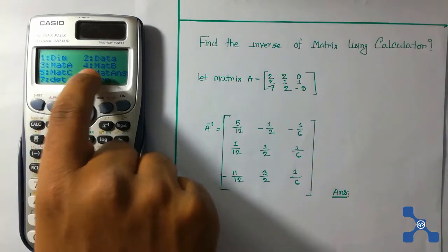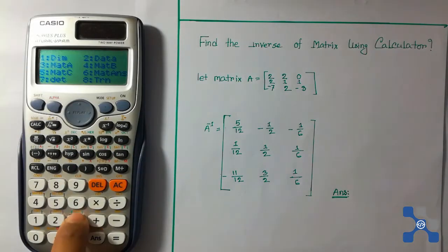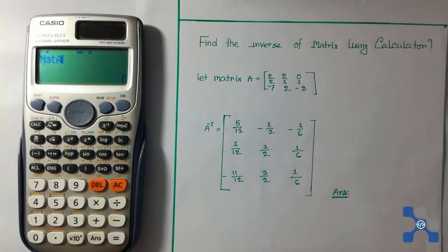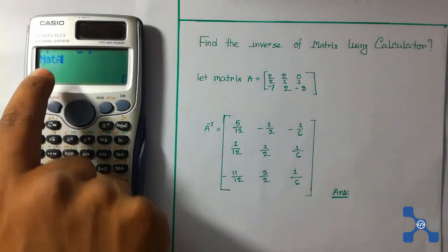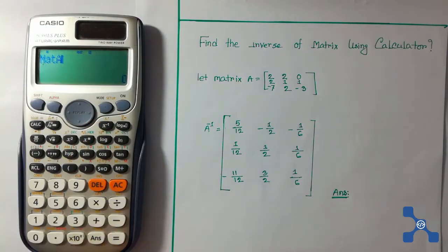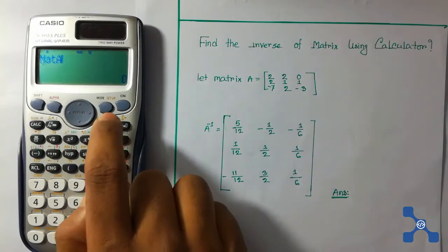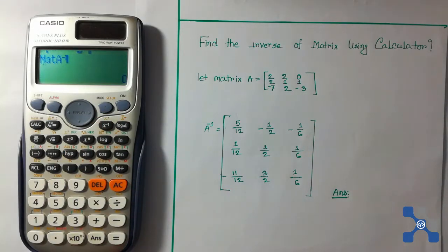Press 3 for mat A. We can see mat A is displayed. Now press the inverse button to find the inverse of this matrix, and then press the equal button to get the result.